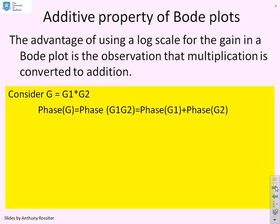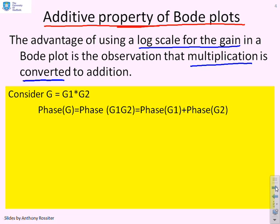First of all we need to understand what we're going to call the additive property of Bode plots, and this comes about because we're using a log scale for the gain. And what that means is that multiplication is converted to addition. So first of all let's see what happens if we have two transfer functions multiplied together. So I'm going to do G equals G1 times G2. Now we know that the phase of the product, which means phase G1 times G2, is the phase of G1 plus the phase of G2. So if we multiply two things together, we add the phases.